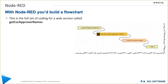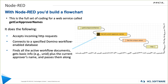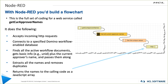To solve the problem with Node-RED, you build a flow chart. What you see here is all the code required for a web service called 'Get Current Approver Names.' The first box at top left accepts incoming HTTP requests; when a request comes in, we connect to a Domino database to retrieve the values. We get back information like current approver names and pass it to the next function node, where we extract all names and remove duplicates before returning to the output node. Just four building blocks and we have a Domino database provided as a web service.